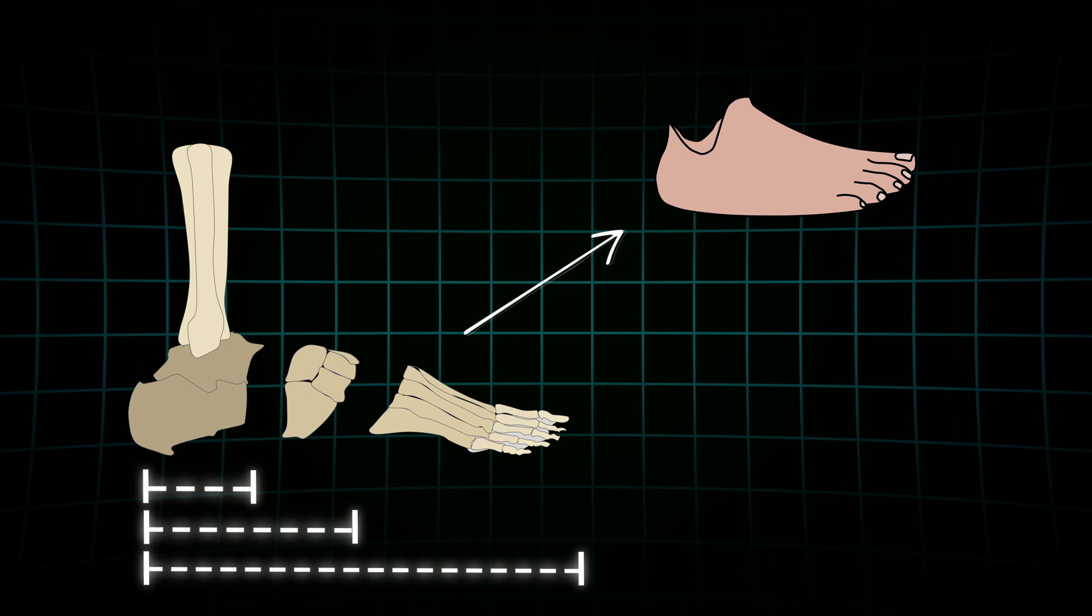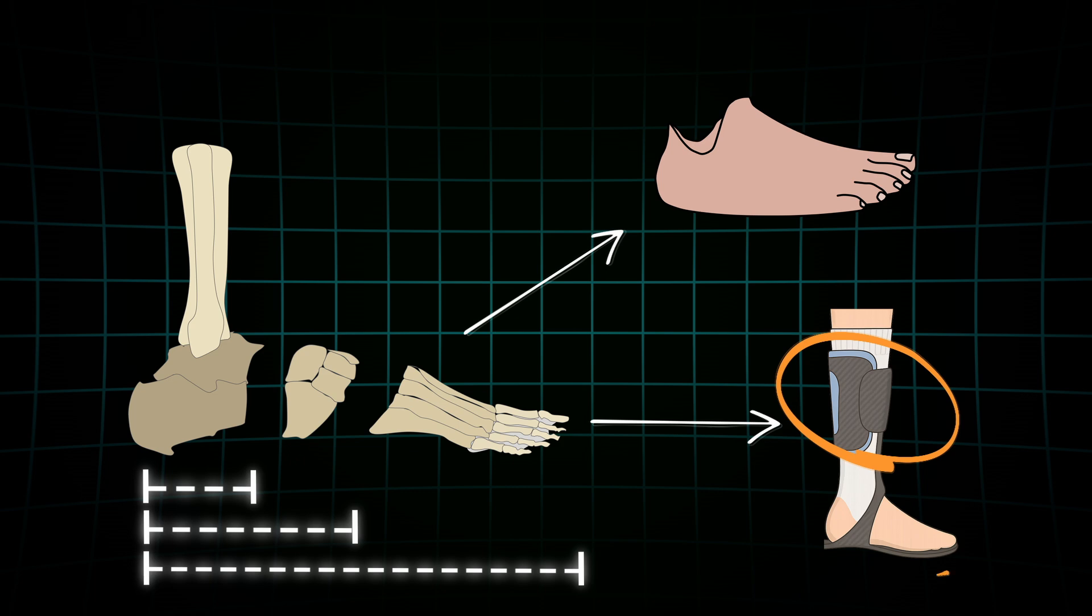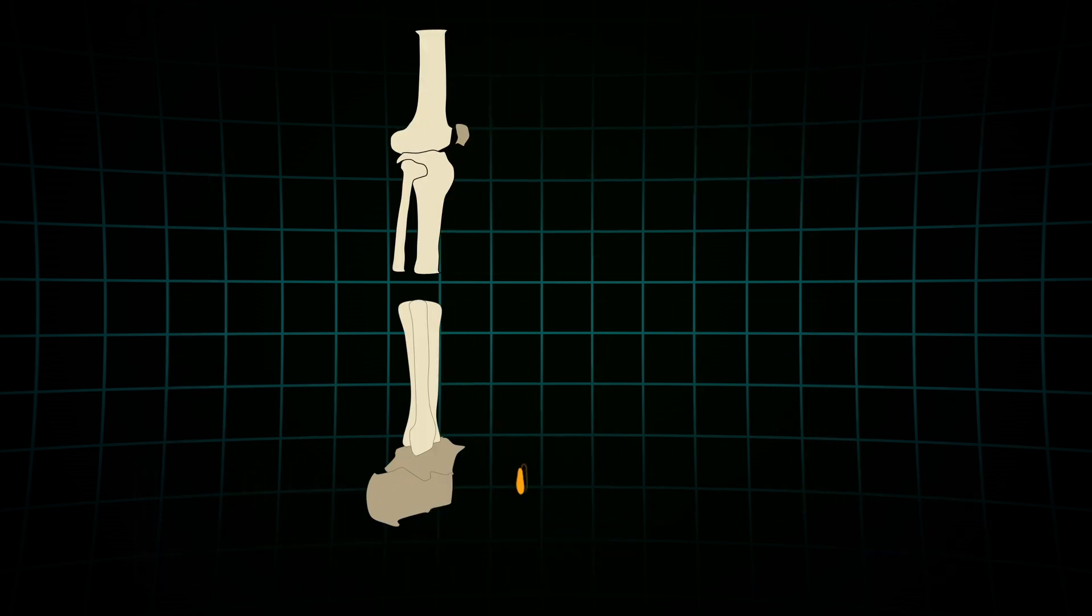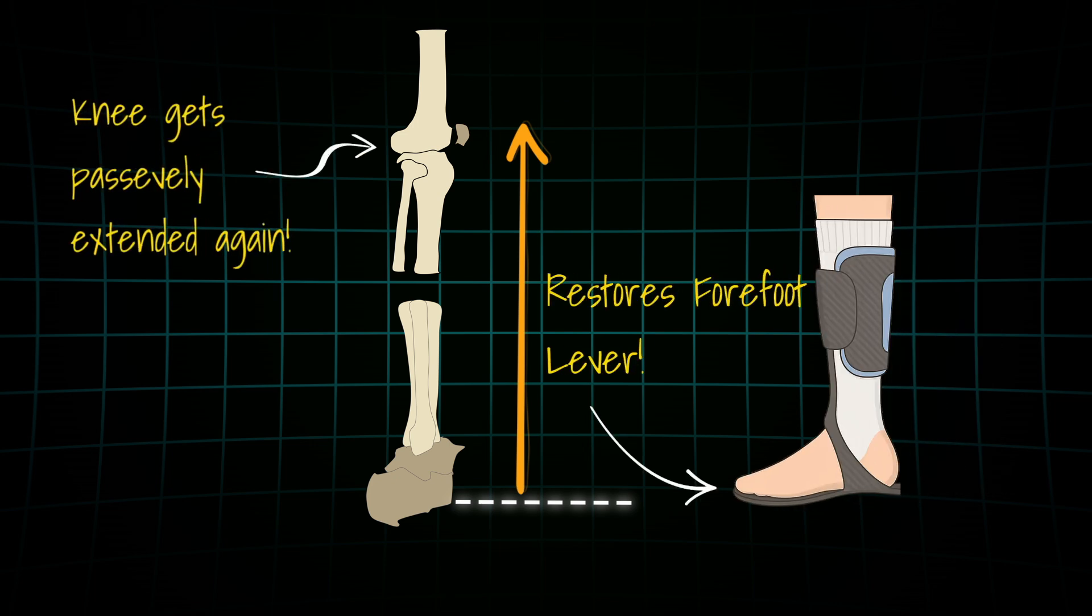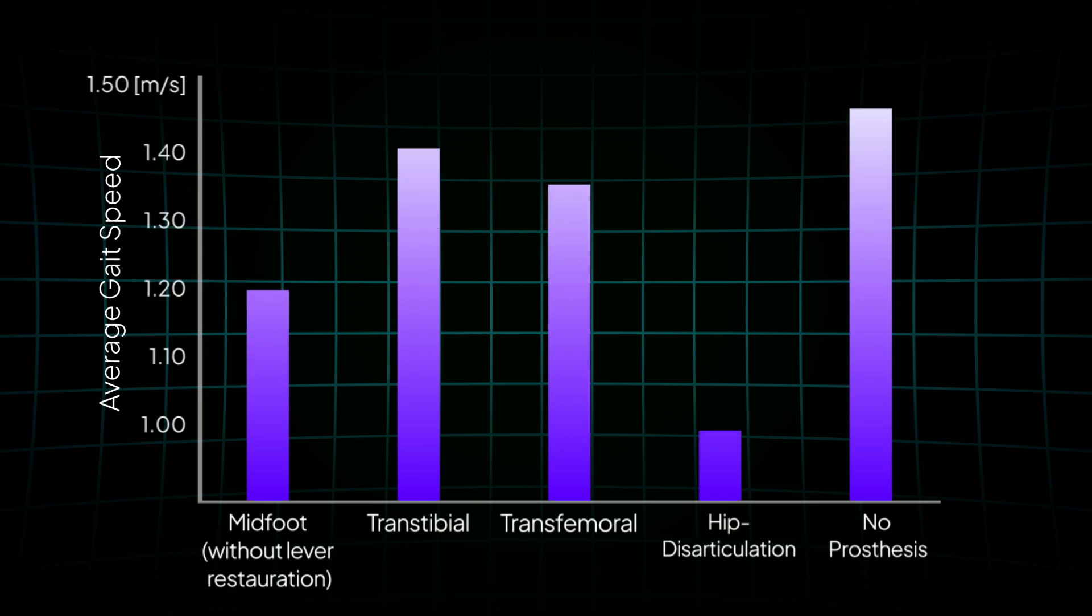To restore normal walking, we need devices that rebuild the lost foot lever, like advanced AFO variations with a ventral shell and sufficient forefoot stiffness. This enables the user to shift the weight forward again, extend the knee passively, and regain the physiological stability while standing or walking. Without them, even forefoot amputees can end up walking slower and are prone to compensations like genu recurvatum, genu varum, or other unwanted adaptations.